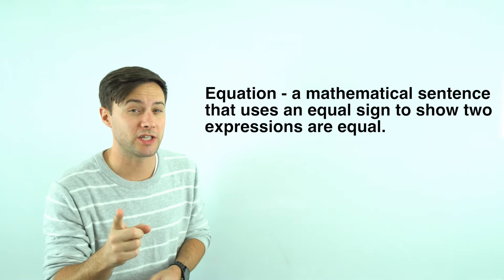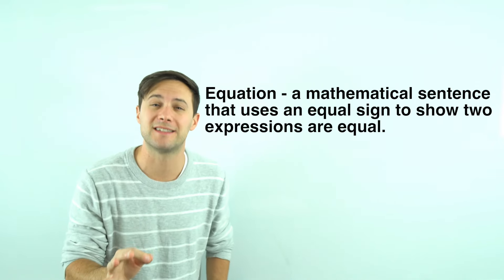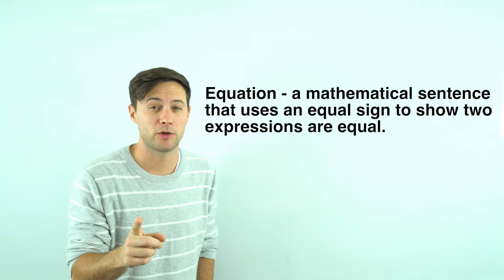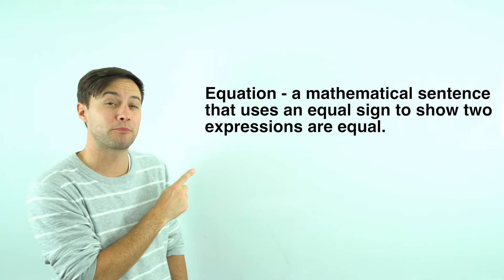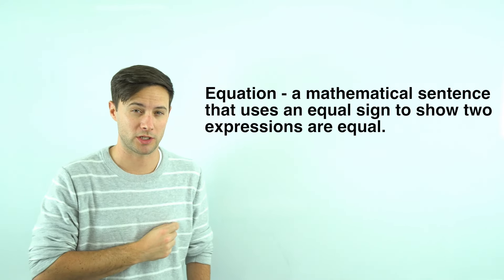Before we get to our first example, let's talk about what exactly an equation is. We've already learned about expressions, which are mathematical phrases that didn't have an equal sign, but an equation is a mathematical sentence that does have an equal sign and shows that two expressions are equal to each other.